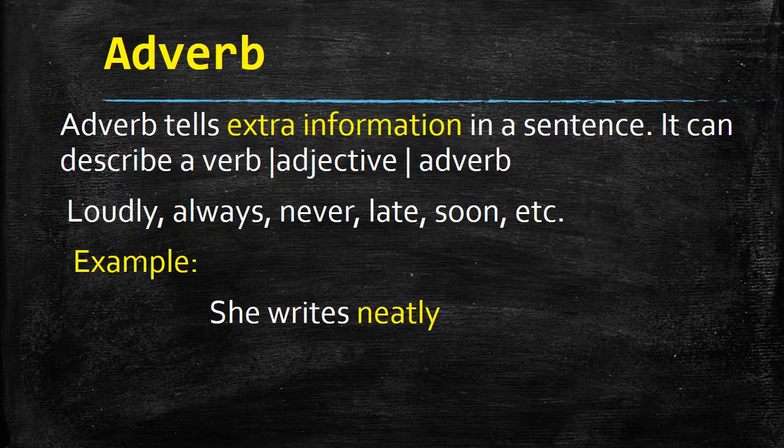Our next part of speech is adverb. An adverb tells extra information in a sentence. It can describe a verb, adjective or another adverb. For example: loudly, always, never, late, soon — jahaan is tarah ke words use honge, wo adverb kehlayenge. For example, 'She writes neatly' — here 'neatly' is used as an adverb which enhances the meaning of the verb 'writes'. Woh khubsoorti se likhti hai — likhti hai lekin khubsoorti se likhti hai.